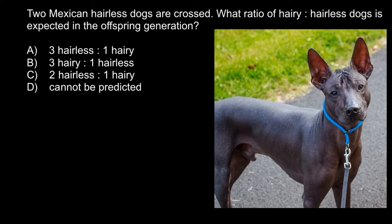To solve this problem, some of you may say that because it's not stated in the problem whether the hairless trait is dominant or recessive, the answer should be D — we cannot predict the outcome of such a cross. But actually, if you take a close look at the answers, there is one correct answer. A 3-to-1 ratio would mean we're breeding two heterozygous dogs, with either hairless or hairy as the dominant trait.